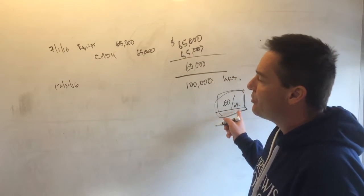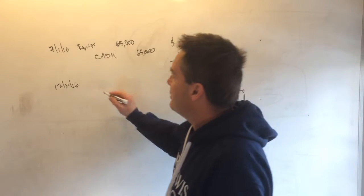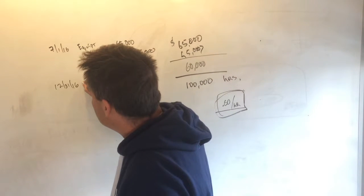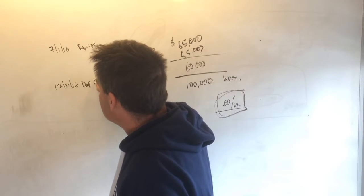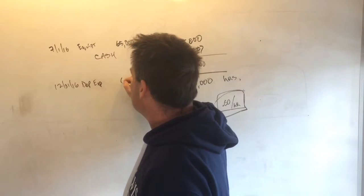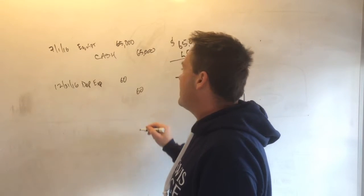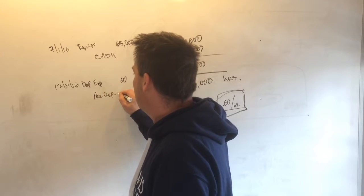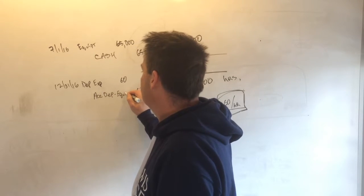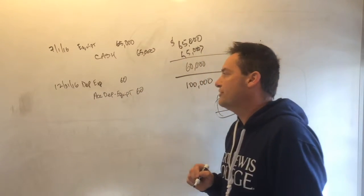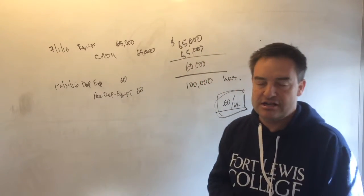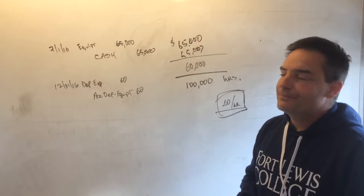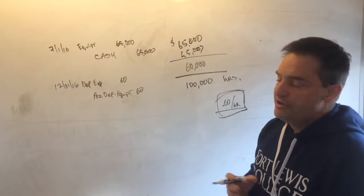100 hours times 60 cents an hour is $60. So then the journal entry would be a debit to depreciation expense for $60, and you would credit the accumulated depreciation equipment account for the $60. That would be the journal entry at the end of year one.